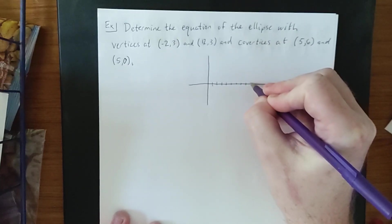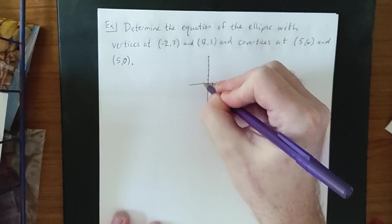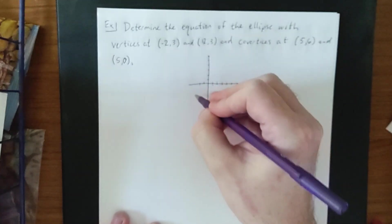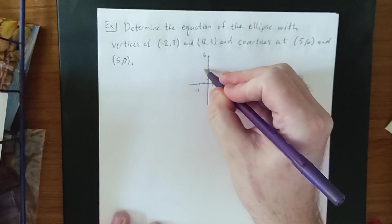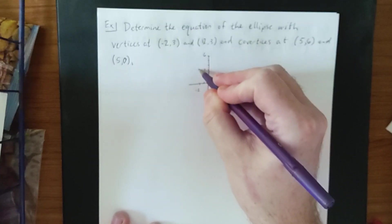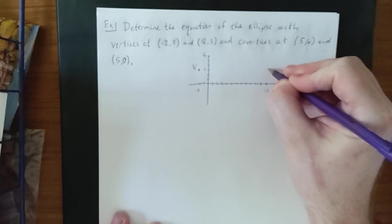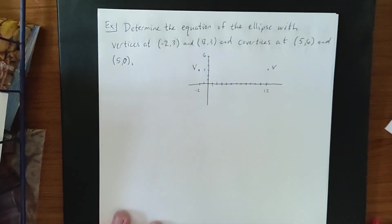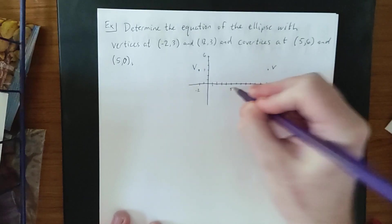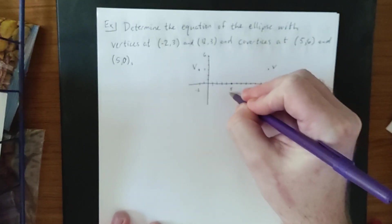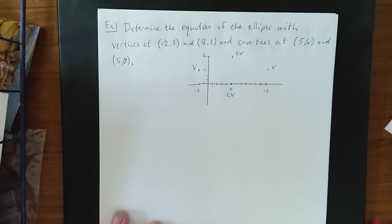Setting up the coordinate plane precisely, we count out to 12 in the positive x-direction and negative 2 in the negative direction, and up to 6 on the y-axis. The vertices at negative 2, 3 and 12, 3 are marked with a V. The co-vertices at 5, 0 and 5, 6 are marked with CV.